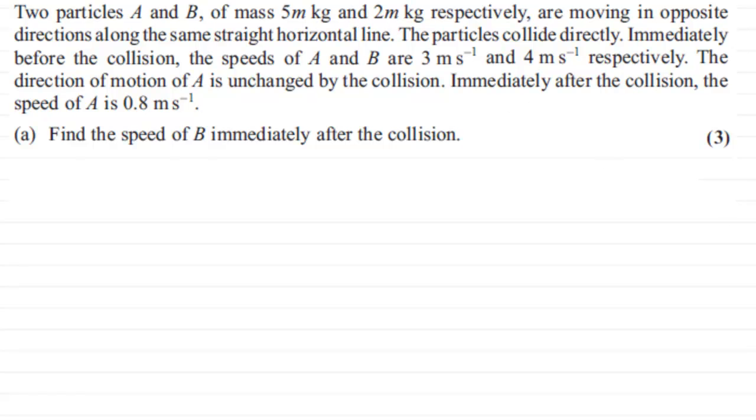So I would start off with the two particles A and B with masses of 5m kilograms and 2m kilograms. If the particles collide directly and they're moving in opposite directions, then clearly A must be moving towards B. So draw something like this.